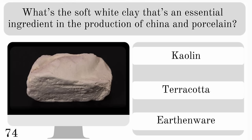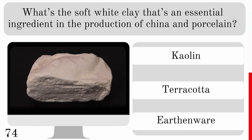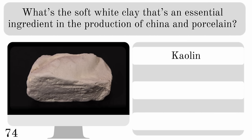What's the soft white clay that's an essential ingredient in the production of china and porcelain? Kaolin, terracotta or earthenware? And the answer is kaolin.